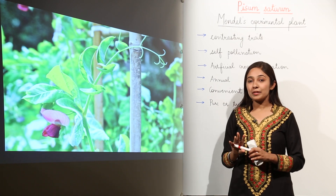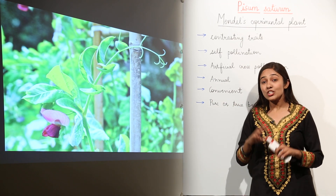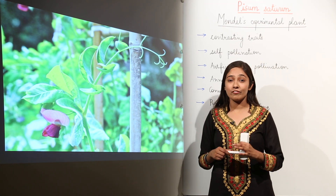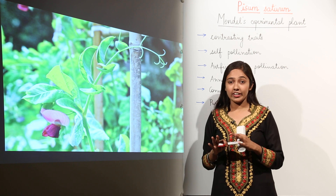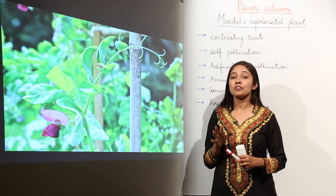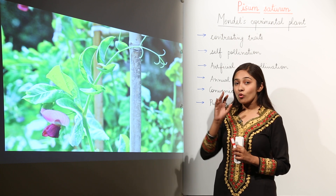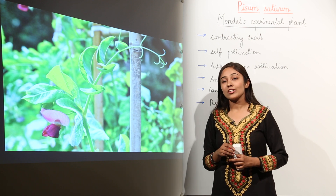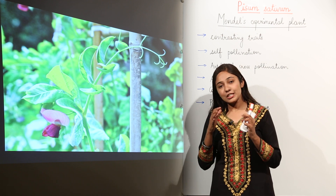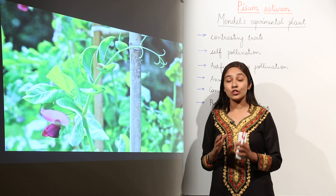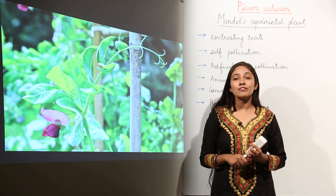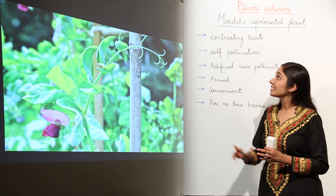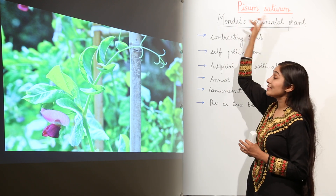For all his experiments and to lay down the basic laws of heredity, the father of heredity, Gregor John Mendel chose the pea plant — the garden pea plant, or edible pea plant — for all his experiments. The scientific name of this garden pea plant is Pisum sativum.